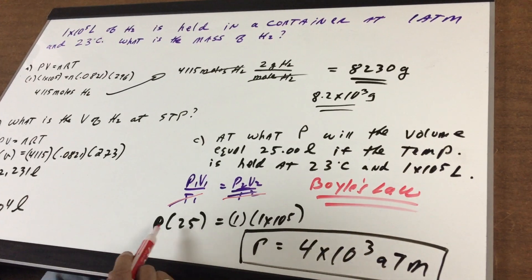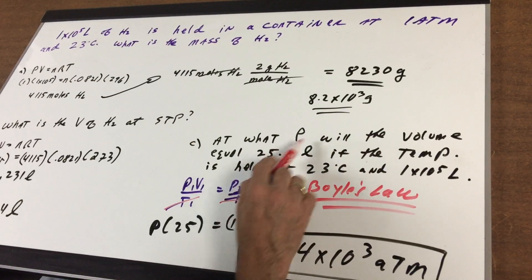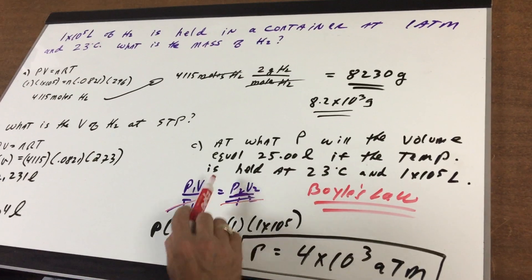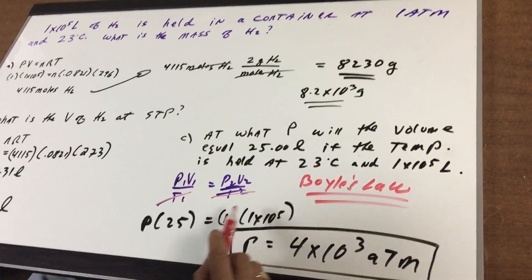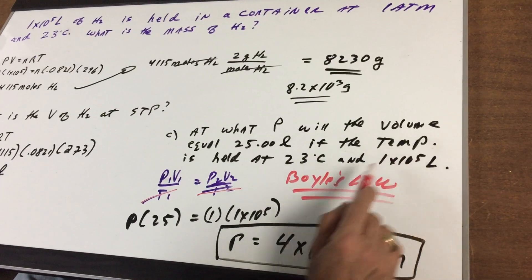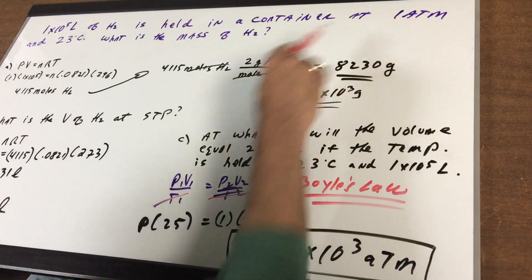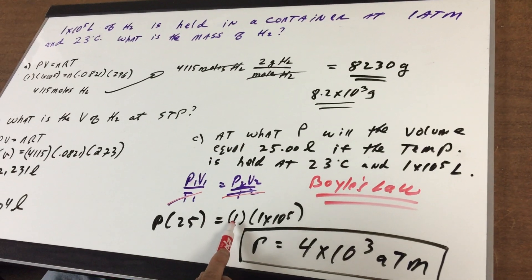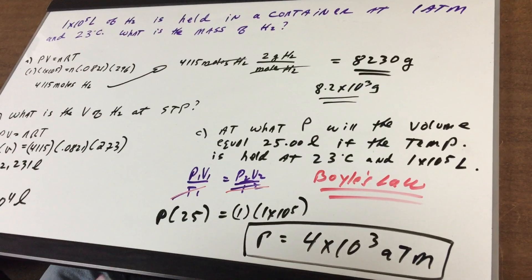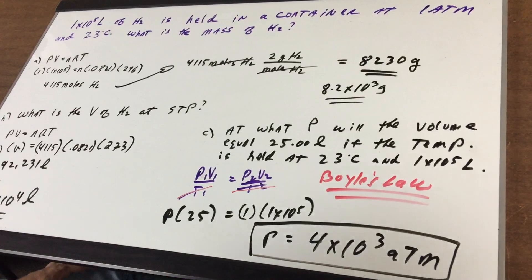We don't know the pressure, but it says the volume at this pressure was 25. Then at 23 Celsius, which we know is constant, we have one to the fifth liters. And we're at the pressure, if you go back to the problem, was one atmosphere. So the pressure was one. The volume is one to the fifth. So we're going to take this and divide it out, and we get 4,000, which is four to the third atmospheres.